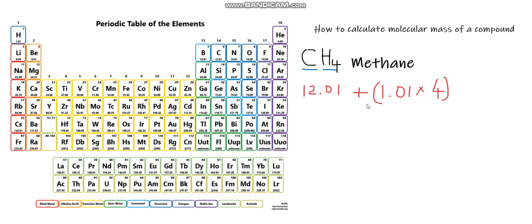That's because hydrogen has 4 atoms in methane, as you can see written here. That's why we need to multiply 1.01, the molar mass of hydrogen, by 4 because there are 4 atoms.